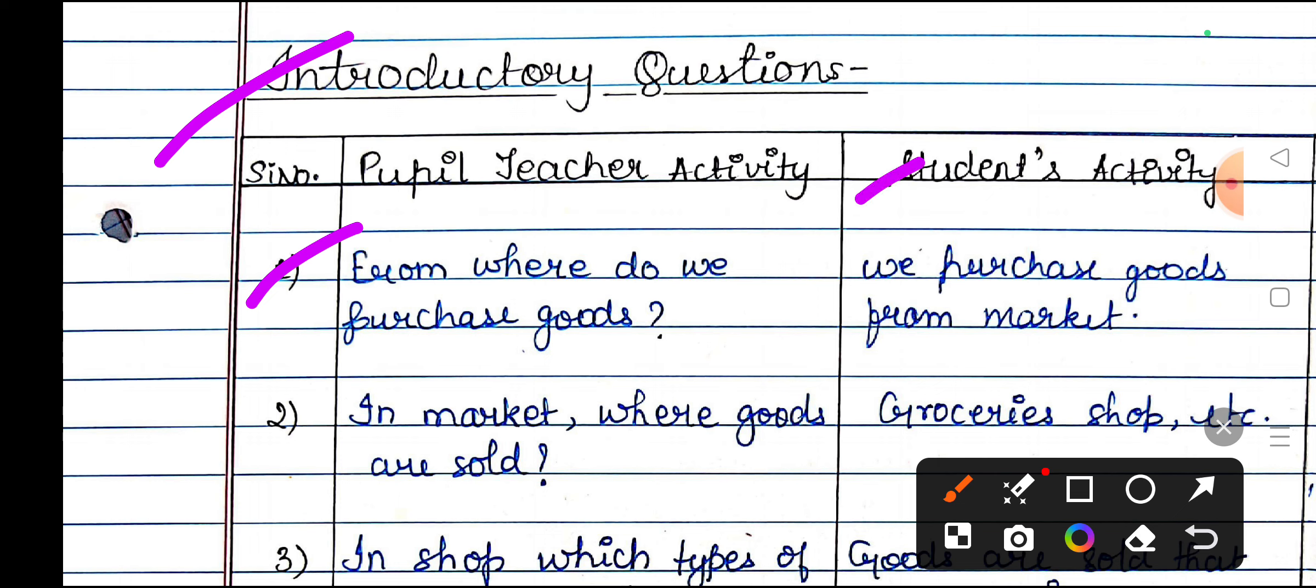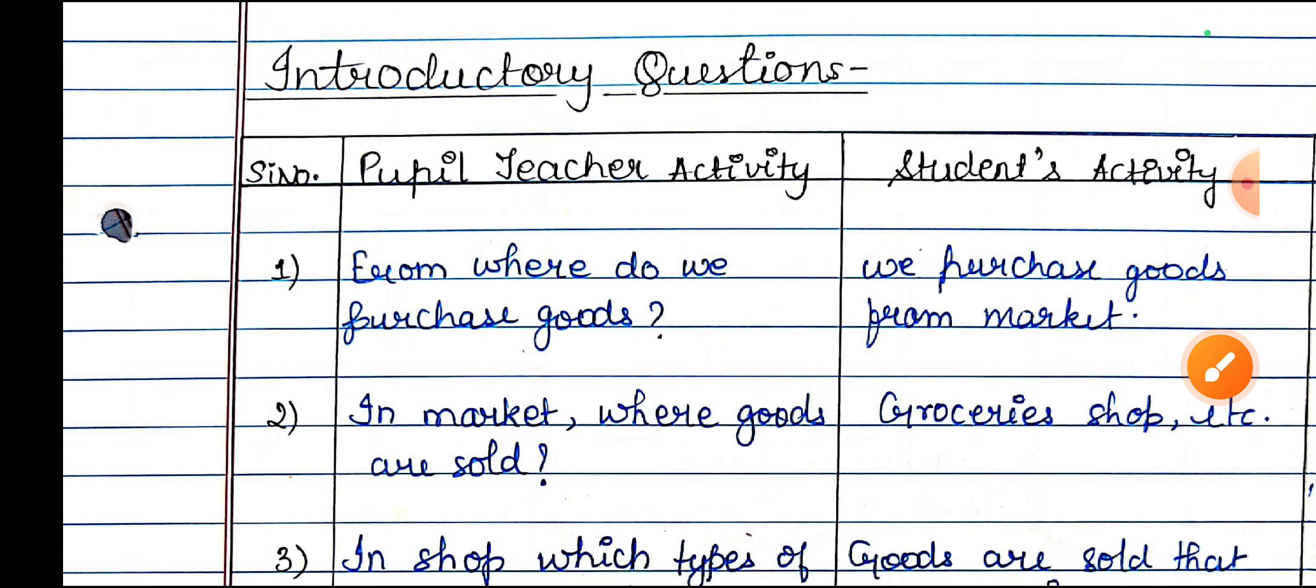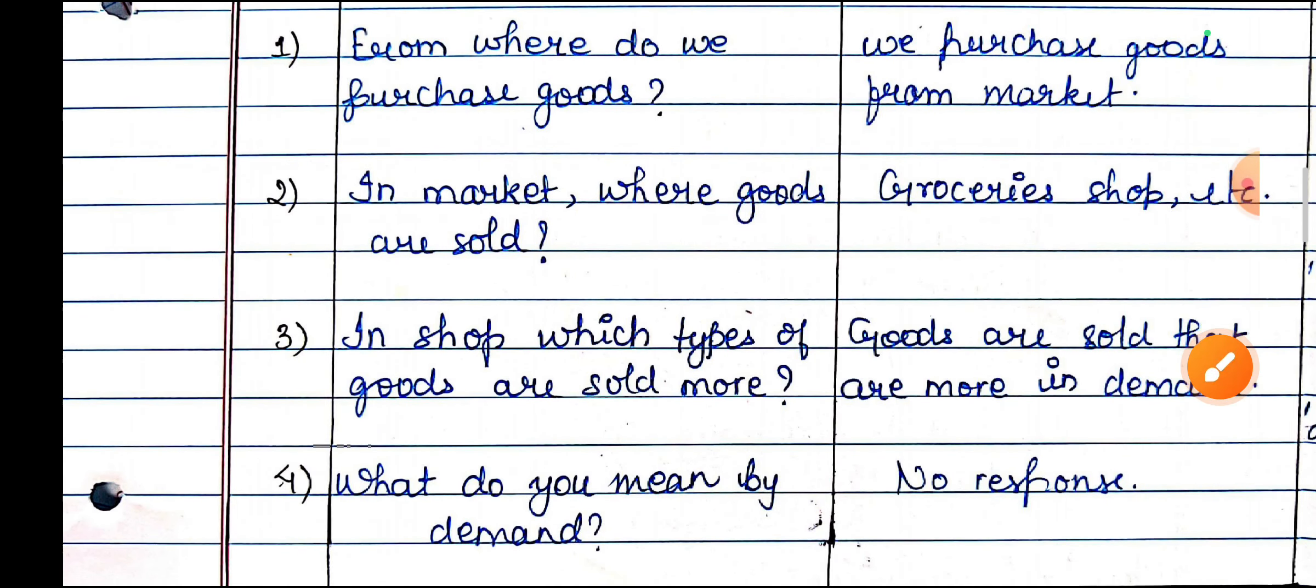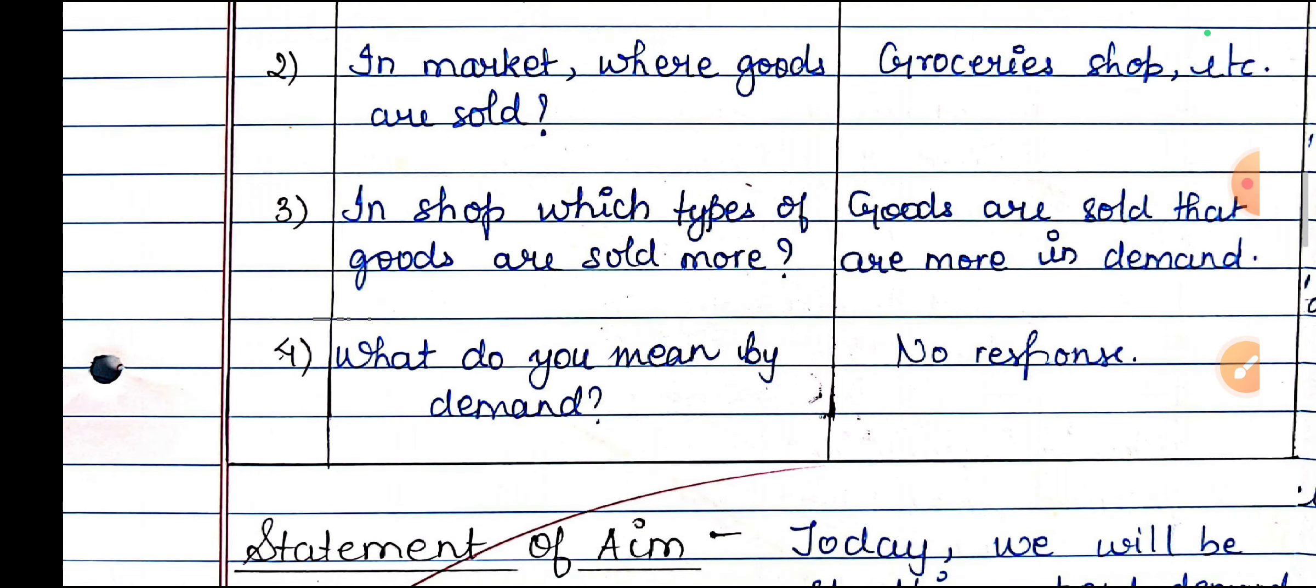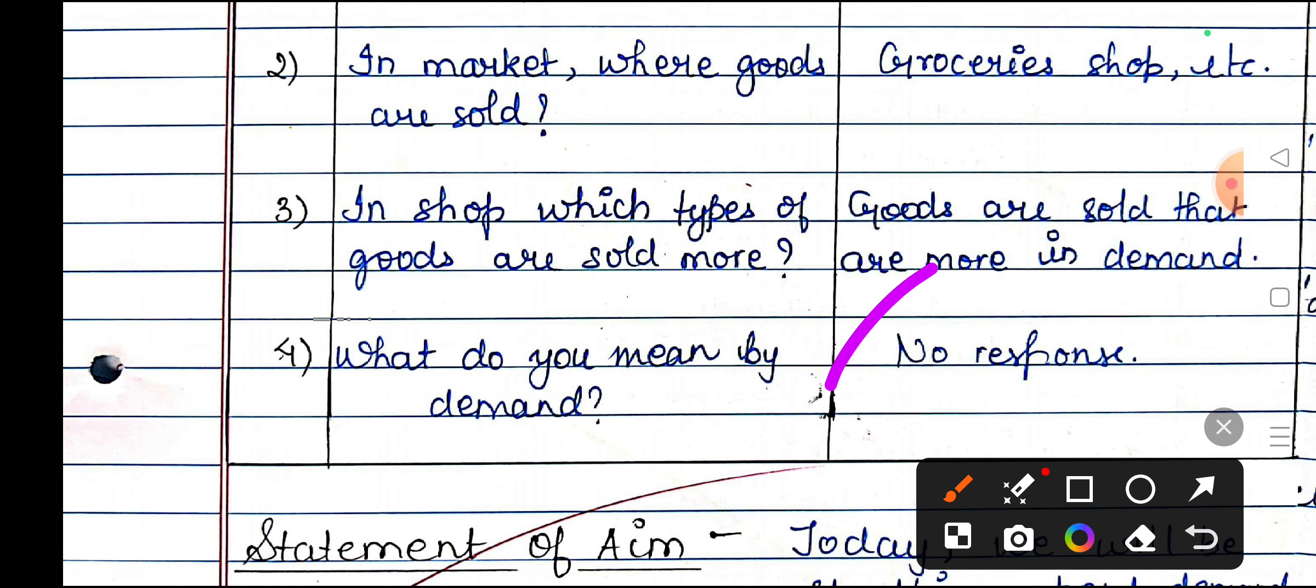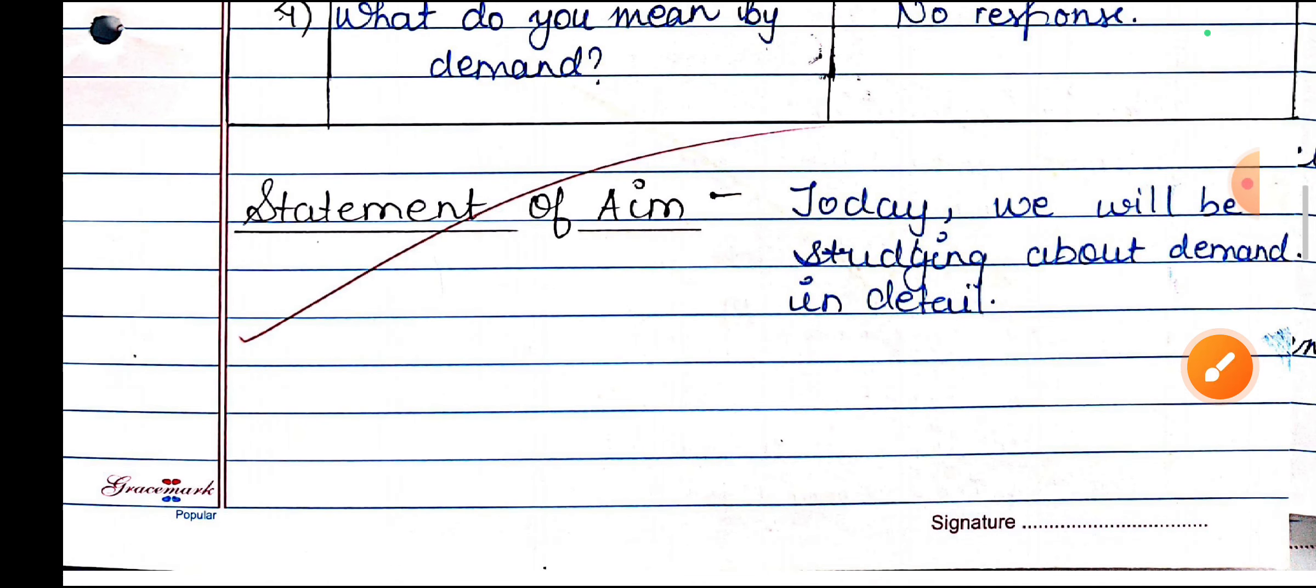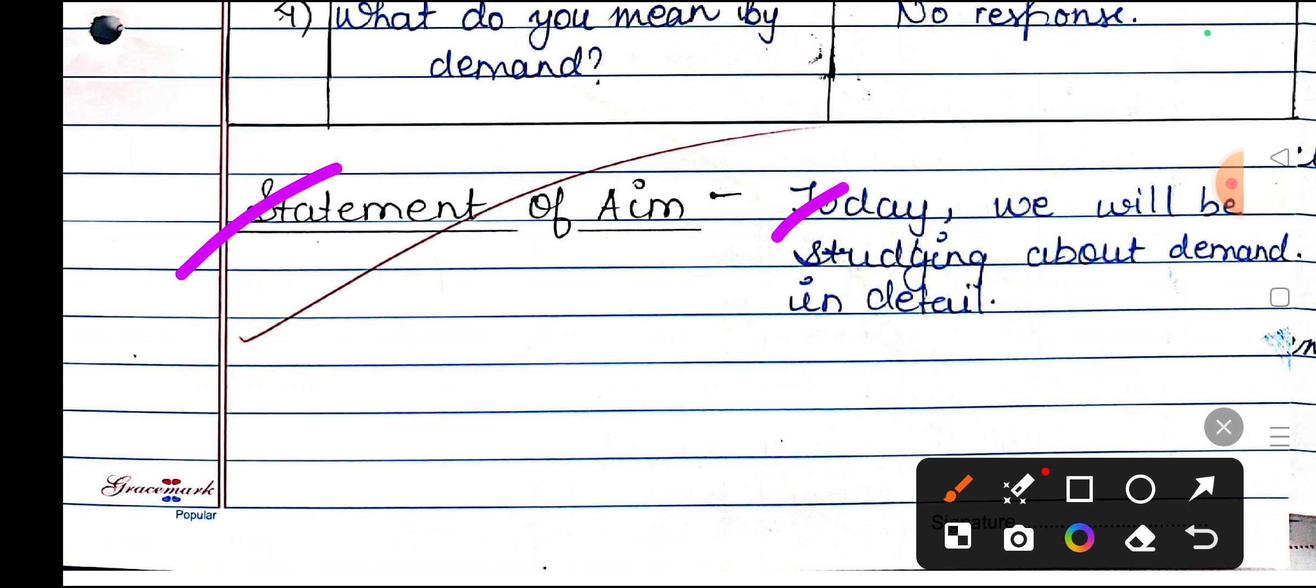Introductory questions will be heading with teacher activity and student activity columns. Approximately three to four, five questions will be asked. The last question will be problematic. The next statement of aim. Today we will be studying about demand in detail.